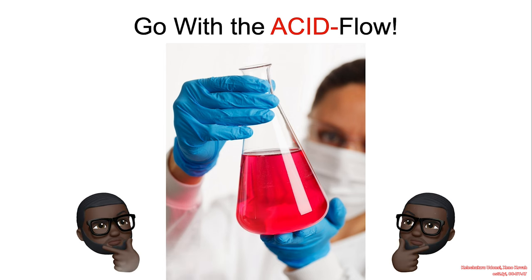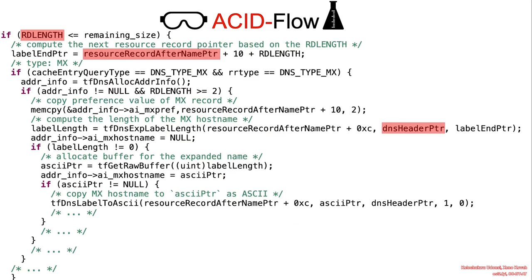Welcome back. Let's go with ACID-Flow. We see that rud length is used to perform an arithmetic operation to determine the length of the label and the end of the entire hostname. In this case, this is the end of the entire record that we'll be reading. Then we see that the function tf_dns_exp_label_length is invoked, passing the label, label end pointer, and the start. This is past the headers now, so this is the resource record after the headers.